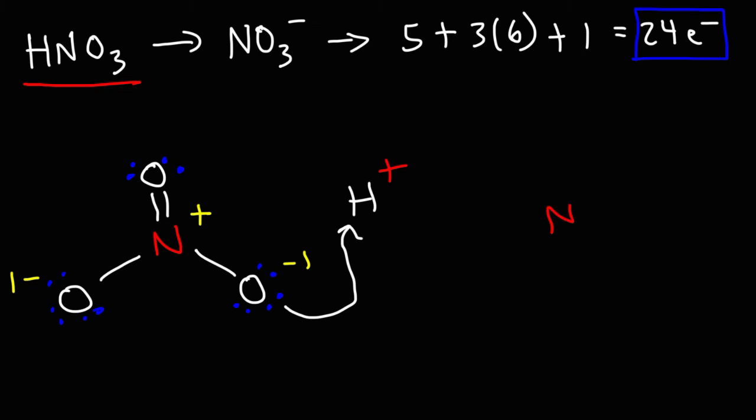And so we're going to get a Lewis structure that looks like this. So now this oxygen no longer has 3 lone pairs, but it has 2. The one on the right, I mean the one on the left, still has a negative charge. And nitrogen still has its positive formal charge. So when you add up the negative charge and a positive charge, you can see why this molecule is neutral overall.